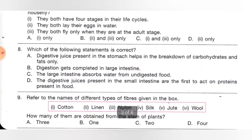Eighth one: which of the following statements is correct? A: digestive juice in the stomach helps in the breakdown of carbohydrates and fats only — incorrect. B: digestion gets completed in the large intestine — incorrect; digestion gets completed in the small intestine. C: the large intestine absorbs water from undigested food — this is the correct statement. D: digestive juices in the small intestine are the first to act on proteins — also incorrect. Option C is the correct answer.